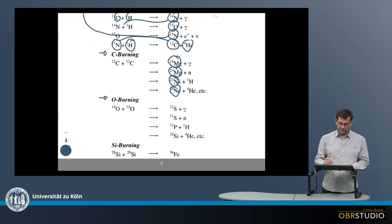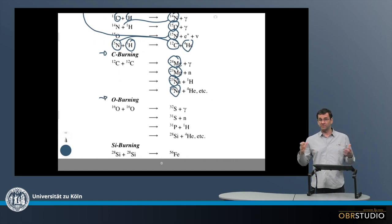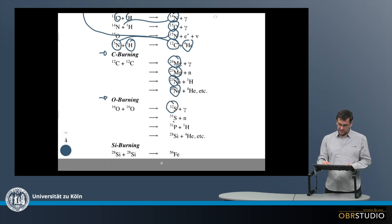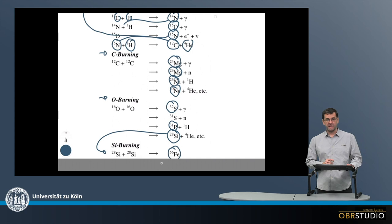And after this, oxygen burning can start. For this we need really very massive stars. And these together form, for example, sulphur, phosphorus, or silicon. And then finally, in the most massive stars, the silicon can be used to ultimately produce iron.